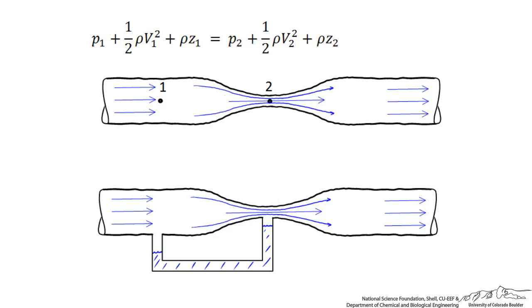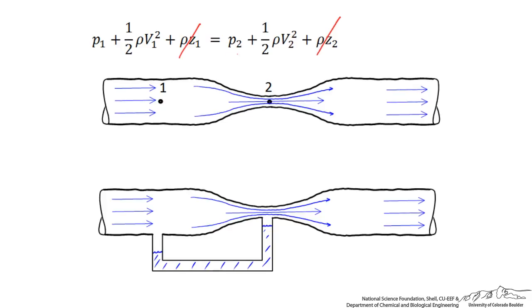If we examine the energy between points one and two, we find that the potential energy between those two points is the same because they're at the same level. The velocity at point two is greater because it's flowing through the constriction, and what happens is the fluid gains kinetic energy at the expense of pressure energy as it flows through. As a consequence of this equation and the three assumptions, the fact that the velocity increases results in a decrease in the pressure.